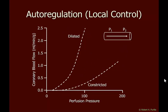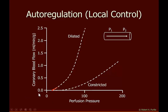Let's look at autoregulation — this is local control. Assuming a vessel that cannot constrict and is fully dilated, increasing perfusion pressure causes coronary blood flow to rise continuously, eventually starting to curve off. If instead vessels are fully constricted and not allowed to dilate, increasing perfusion pressure again increases coronary blood flow, but with a much less steep slope. Normally, we see blood flow increase until about 60 mmHg, then taper off into a somewhat flattened region we call the autoregulation region, finally reaching maximal constriction at about 160 mmHg — the point at which vessels can no longer constrict further.